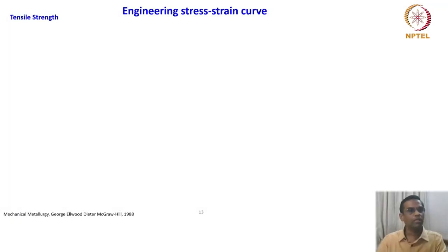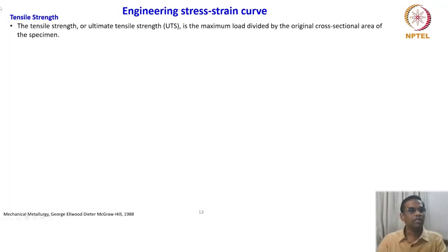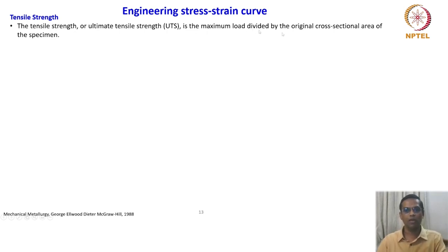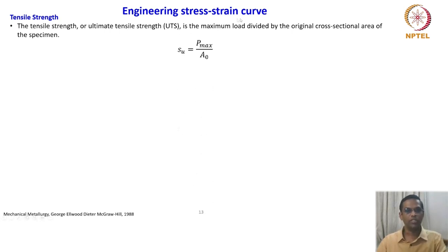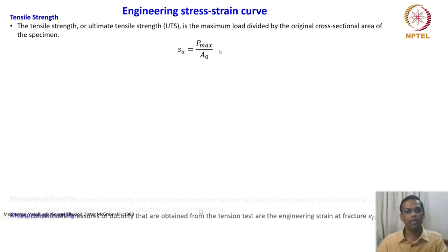We will now go to another parameter called tensile strength, that is the tensile strength or ultimate tensile strength, UTS — the maximum load divided by the original cross-sectional area of the specimen. This is also called the maximum tensile stress or maximum strength, given by S_U, where S is engineering stress, U is ultimate, which is P_max divided by A_naught.